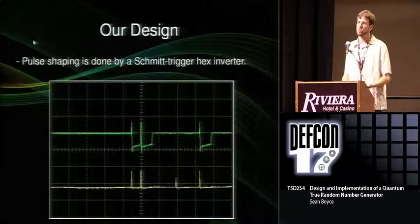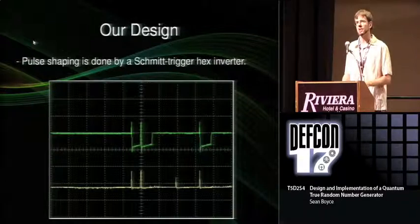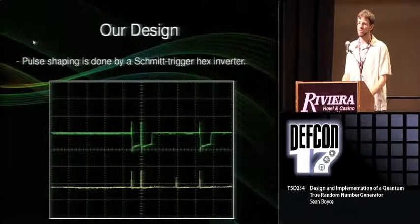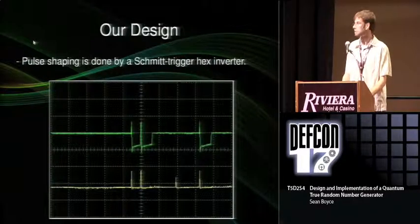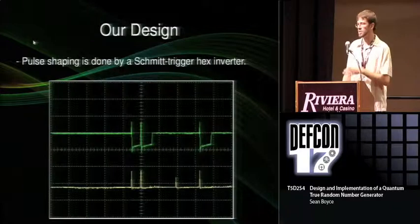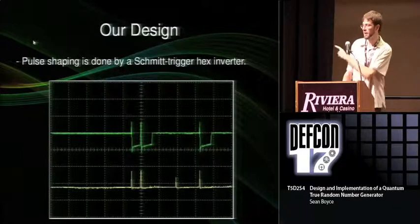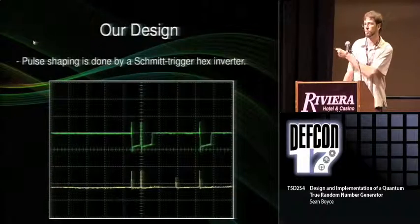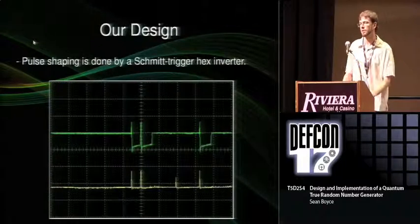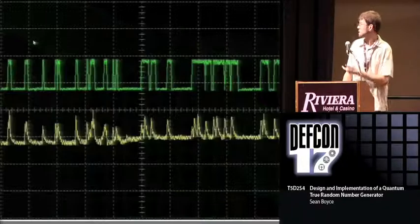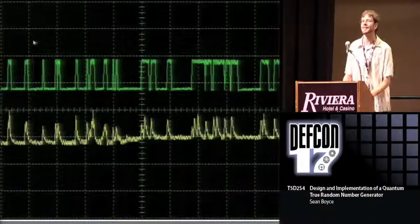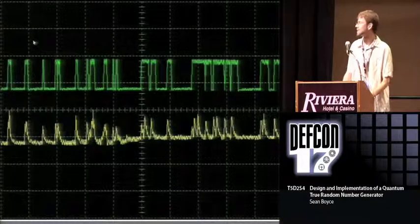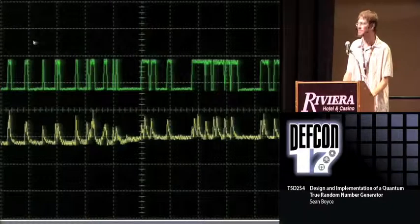Afterwards, when you have the signal at a usable voltage, you do a little bit of pulse shaping to make it easier to sample. For this I use a Schmitt trigger hex inverter, so a spike that would be hard for the microcontroller to catch translates into a bigger logic pulse.